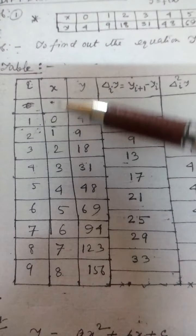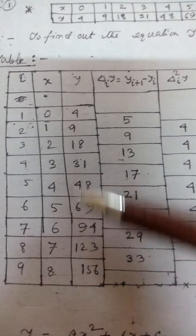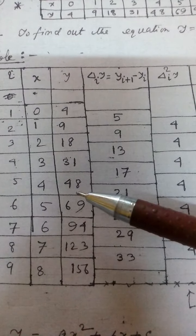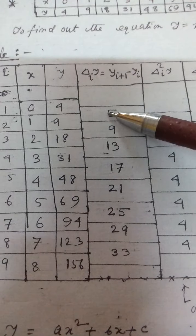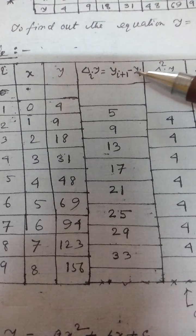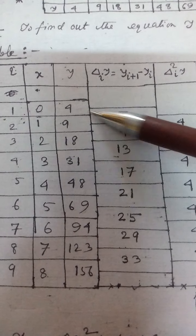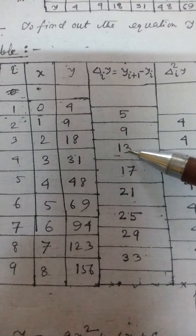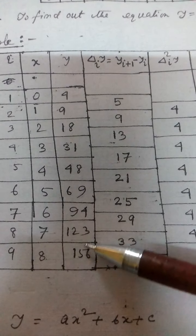The x values are 0, 1, 2, 3, 4, 5, 6, 7, 8, and these are the corresponding y values given in the question. Now this is the first difference delta_i(y), which is y_(i+1) minus y_i. So 9 minus 4 is 5, 18 minus 9 is 9, 31 minus 18 is 13, and so on.